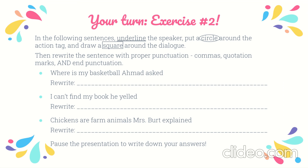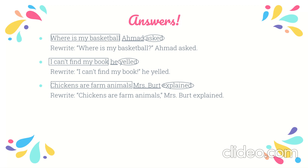Here's a second exercise — same instructions, different sentences. Pause the presentation to write down your answers. For the first sentence, 'Where is my basketball?' is the dialogue. 'Ahmed asked' is the dialogue tag — Ahmed is the speaker and 'asked' is the action tag. We put quotation marks around the dialogue and a question mark as end punctuation. Since Ahmed asked comes at the end, we put a period after it. The same rules apply for the other two problems. Note that 'explained' ends with a comma — don't confuse it with 'exclaimed,' which signals a neutral statement.